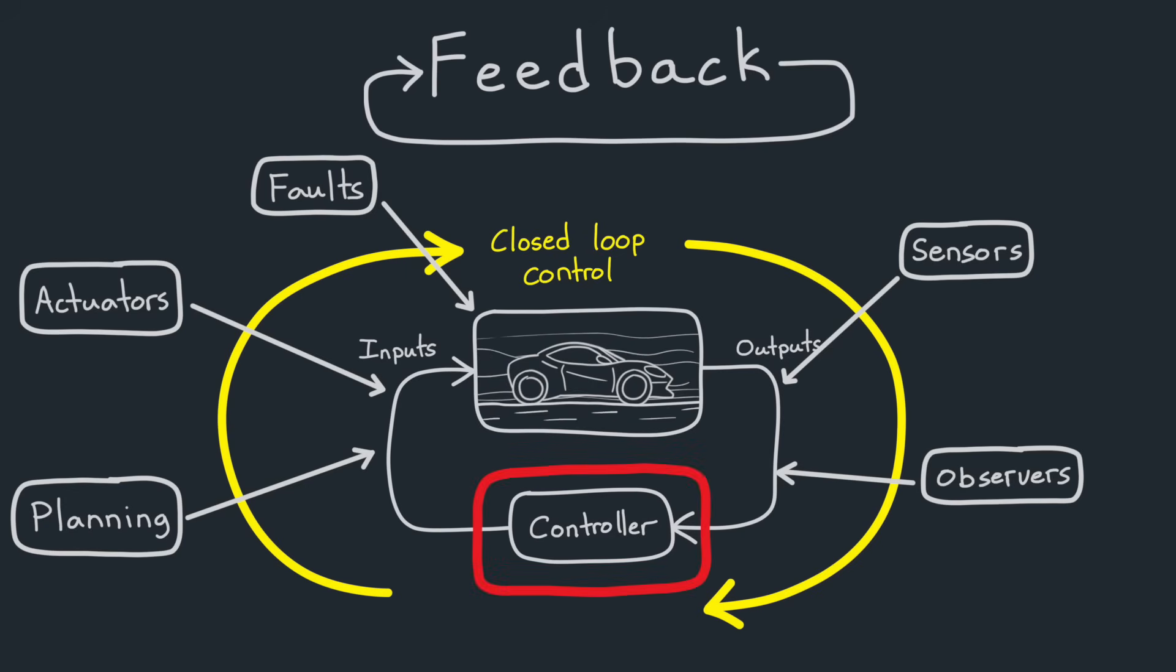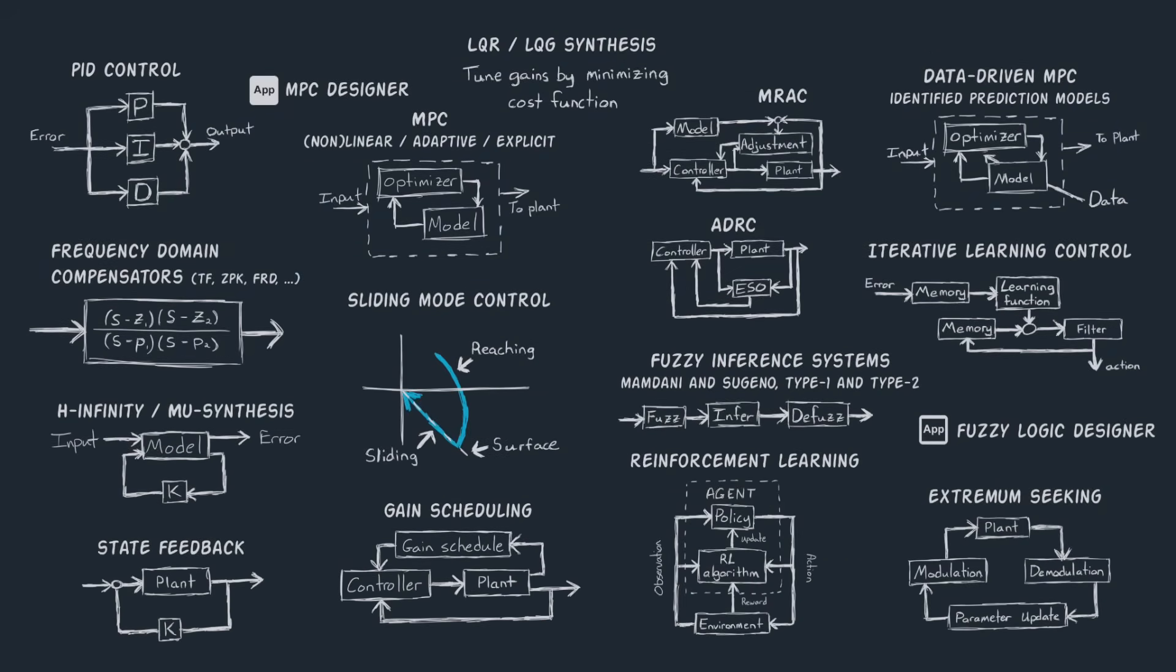But the heart of closed-loop control is the controller. This is the algorithm that takes the outputs of the system, or the estimated states of your system, and then manipulates them in some way to generate the commands that go to the actuators. And as you might imagine, people have come up with hundreds of different ways to do this, or maybe even thousands or tens of thousands. There are a lot.